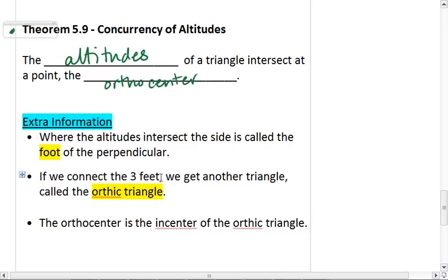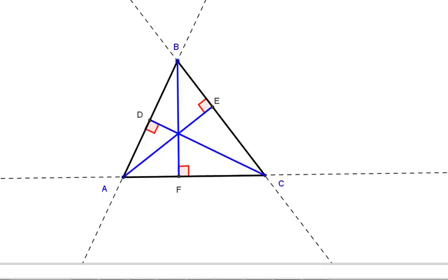Next, we can connect the three feet. And when that happens, we get what's called the orthic triangle. So let's go ahead, we're going to draw line segments in between the three feet. We're going to connect D to E, E to F, D to F.